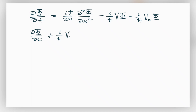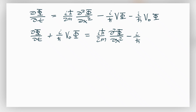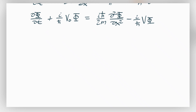We rearrange so that dφ/dt minus i over h-bar times V₀ times φ equals ih-bar over 2m times d²φ/dx² minus i over h-bar times V times φ, moving one of those terms to the other side. We're going to use the integrating factor method to solve this.